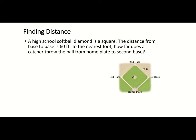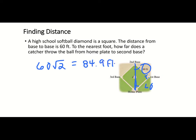Here we have a high school softball diamond, which is a square with 90-degree angles. The distance from base to base is 60 feet. We want to find how far the catcher throws the ball from home plate to second base. The diagonal splits the square into a 45-45-90 triangle, making 60 feet the leg and d the hypotenuse. So d = 60 times √2, which is approximately 84.9 feet, or about 85 feet.